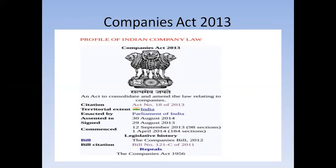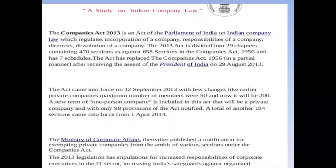After various amendments, the 1956 Act was then repealed by another act, known as the Indian Companies Act 2013. This act was passed to consolidate and amend the law relating to companies. It is cited as Act number 18 of 2013 in India, passed by the Parliament of India on 29th August 2013. The Companies Act 2013 is an act of parliament of India regulating the incorporation of companies and responsibilities of company directors. It is divided into 29 chapters containing 470 sections.